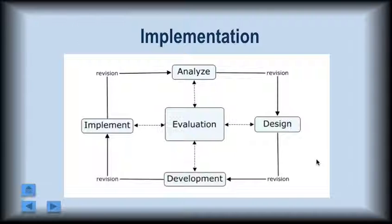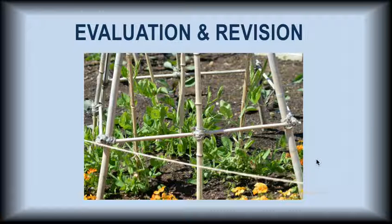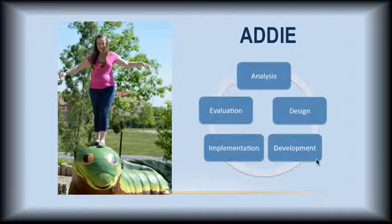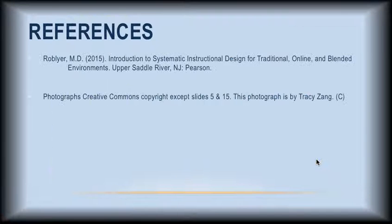Phase three involves evaluation and revision. Here, the designer uses formative evaluations in which they ask whether the instruction engaged students, whether it helped students meet objectives and pass the test or perform the skill, and whether the instruction was effective for all students, including those with different learning abilities. Revisions based on the data from these evaluations are made. Instructional designers also use a summative or program evaluation to assess whether the program is as effective as alternative or cheaper programs. Instructional design is a complex process that's much more in-depth and based on data than lesson planning, but I'm sure you'll master ADDIE.